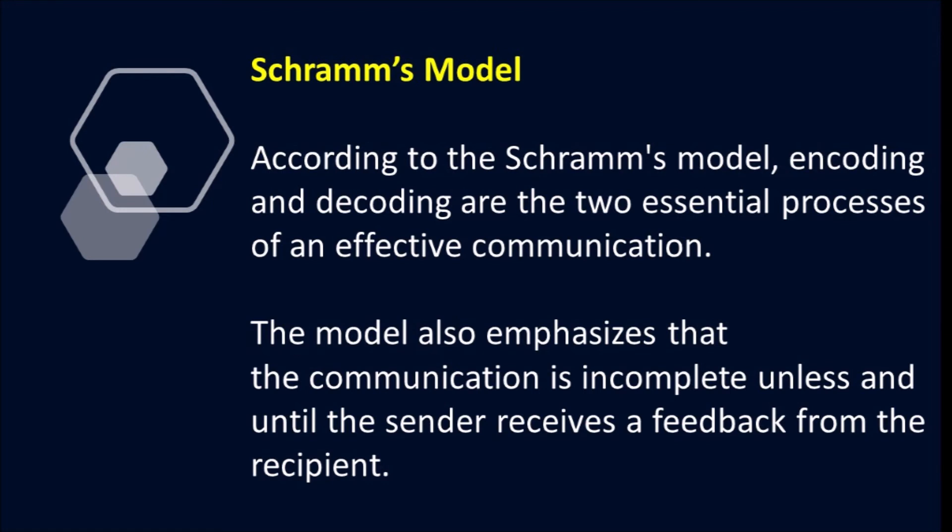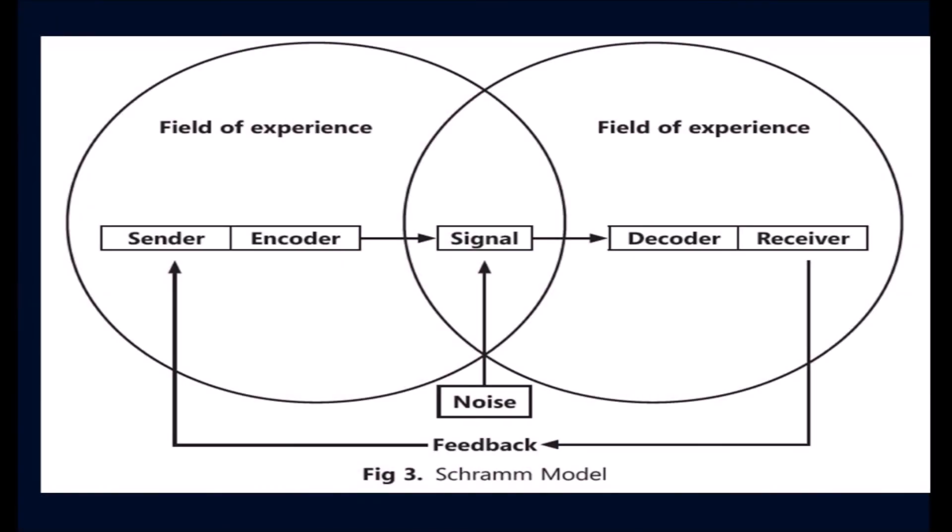According to Schramm's Model, encoding and decoding are the two essential processes of effective communication. The model also emphasizes that communication is incomplete unless and until the sender receives feedback from the recipient.